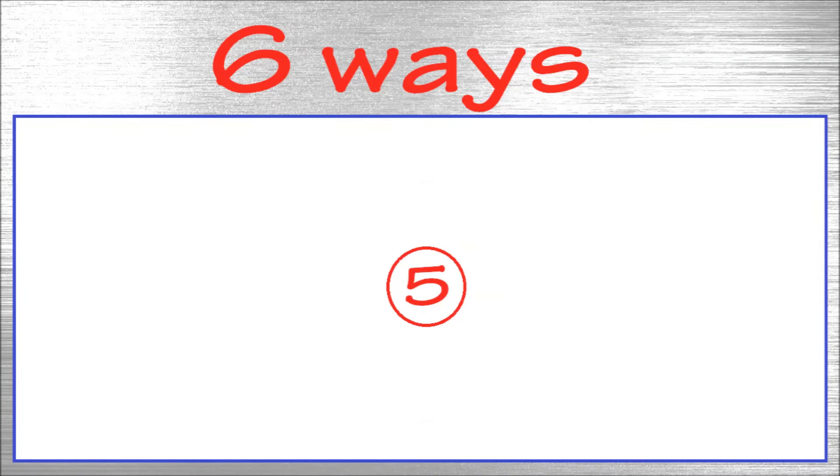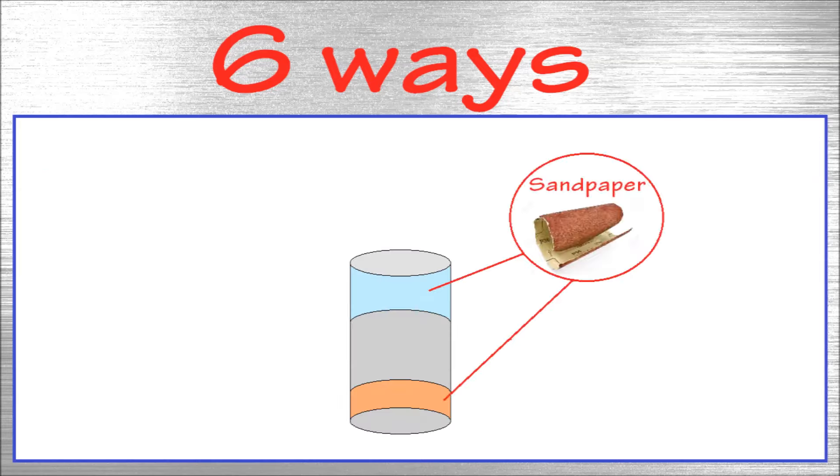Number five: roughen the contact areas. Take some sandpaper and sand down the inside of the displacer cylinder on the cold and hot side. The rough surface will have more contact surface, and therefore the air will have more contact with the hot and cold sides. The air will heat and cool faster.